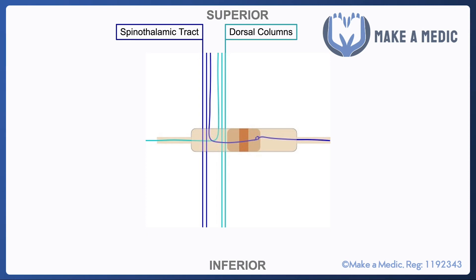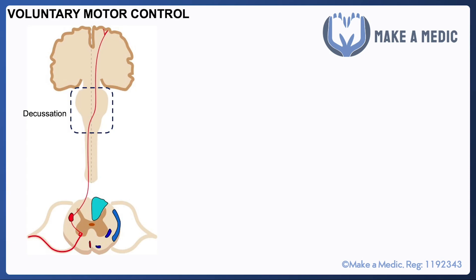One thing I used to find quite confusing in medical school exams was questions about cord compression or disc prolapse and envisaging what was going on within the spinal cord. Here I've tried to depict what it would look like looking front-on at a vertical spinal cord. You can see that pain and sensory fibers come in, synapse in the substantia gelatinosa at that spinal level, then cross the midline and ascend up the spinothalamic tract. With fine touch and vibration, neurons enter the spinal cord and ascend within the ipsilateral dorsal columns, eventually synapsing in the medulla.